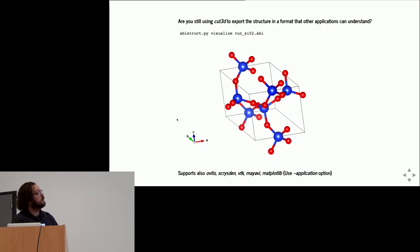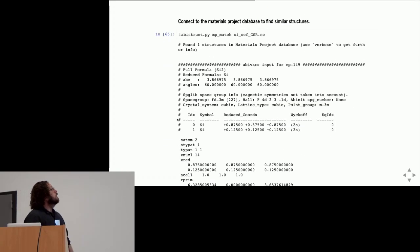I usually prefer to visualize structures, so I use abistruct visualize. This script will generate, for example, a CIF file and invoke a graphical software automatically. The default is VESTA, but you can also change the application on the command line.